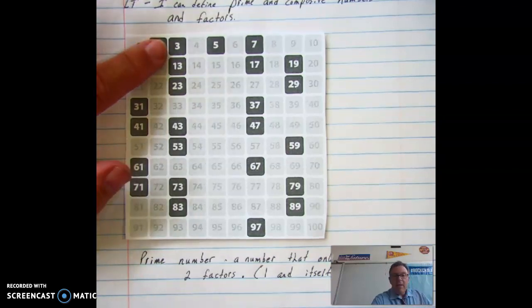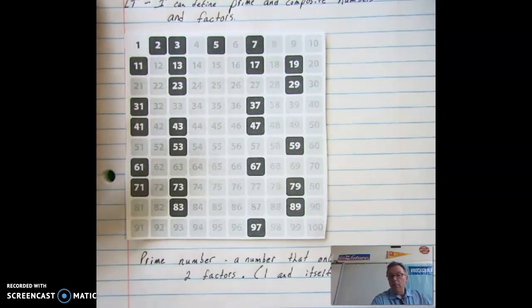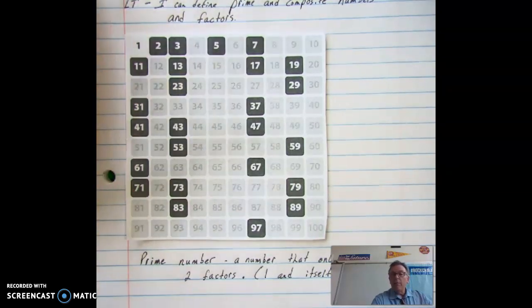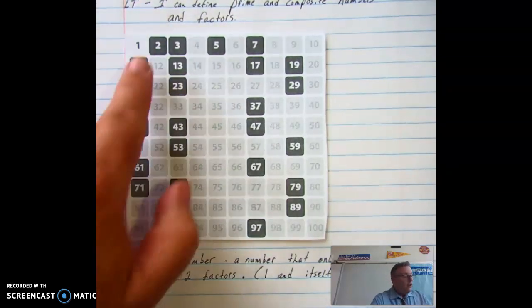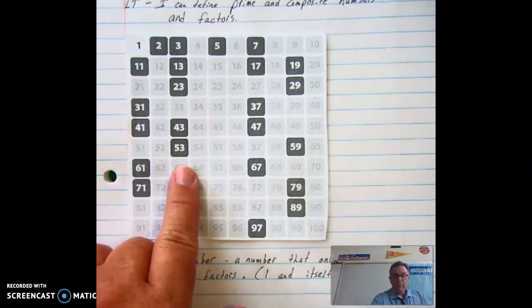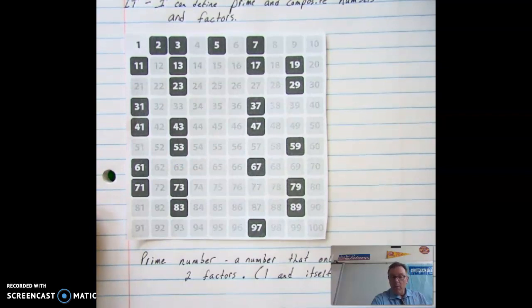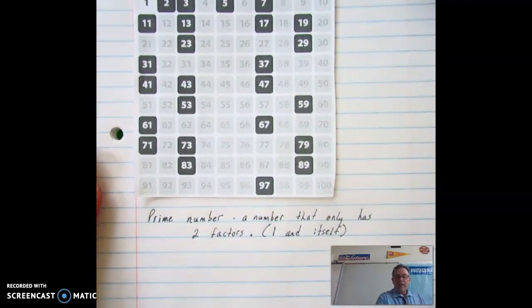What's the only way we can make three? One multiplied by three. What's the only way we can make five? One multiplied by five. So all of these really dark numbers, the only way to do it is to multiply that number by one. Now, there's always another set.